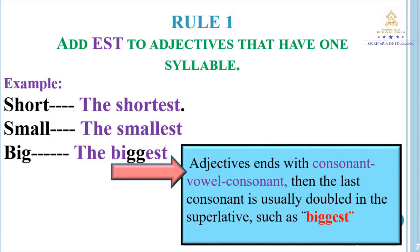Short adjectives — Rule number one: Add -est to adjectives that have one syllable. Vamos a agregar la terminación -est a adjetivos que únicamente tienen una sílaba. Examples: short — the shortest; small — the smallest; big — the biggest.